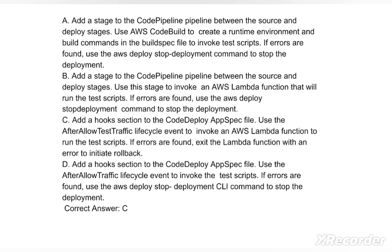Option D: Add a hook section to the CodeDeploy AppSpec file. Use the AfterAllowTraffic lifecycle event to invoke the test scripts. If errors are found, use the AWS deploy stop-deployment CLI command to stop the deployment. The correct answer is option C.